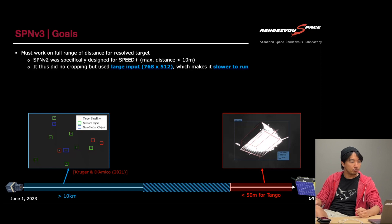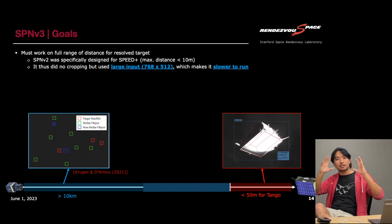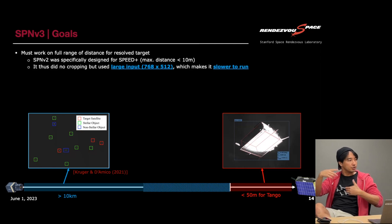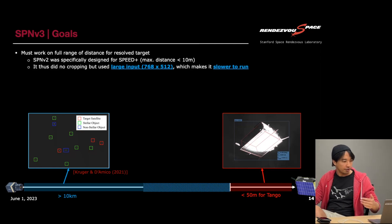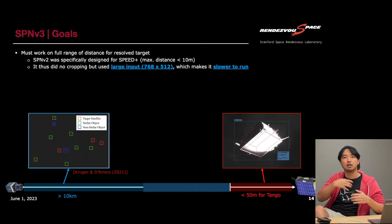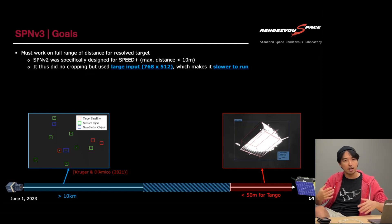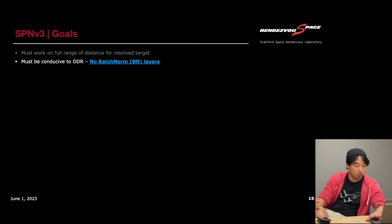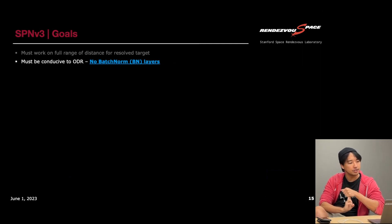Because the target is always quite large in those images, SPMv2 simply downscaled the image and fed it to the CNN, which worked fine. But without any cropping, these large inputs make training and prediction much slower. We need to fix that with SPMv3. Additionally, SPMv3 needs to be conducive to ODR, and the key architectural constraint is that it should not have any batch normalization layers.